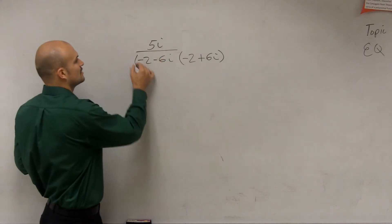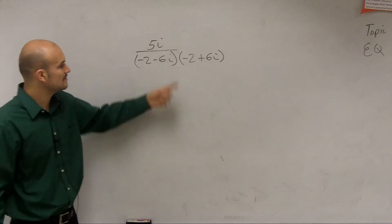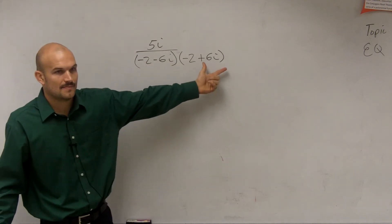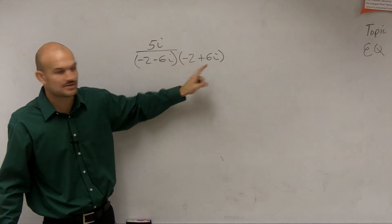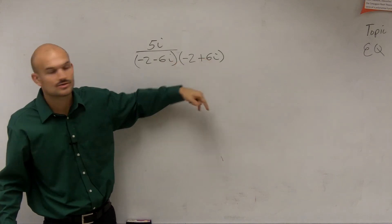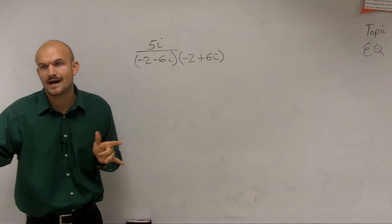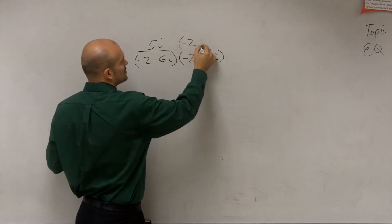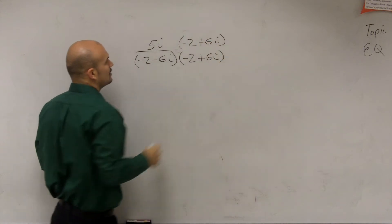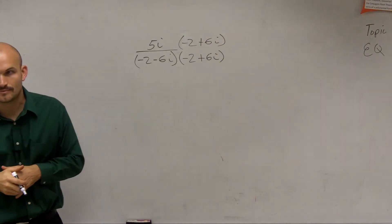So the conjugate, what we call conjugate pairs, are exactly the same, except one is going to be subtraction between the real and imaginary, and one is going to be addition. So whatever one you have, you're going to make sure you multiply by the opposite conjugate pair. Just make sure you multiply by that same conjugate pair on your numerator and your denominator.